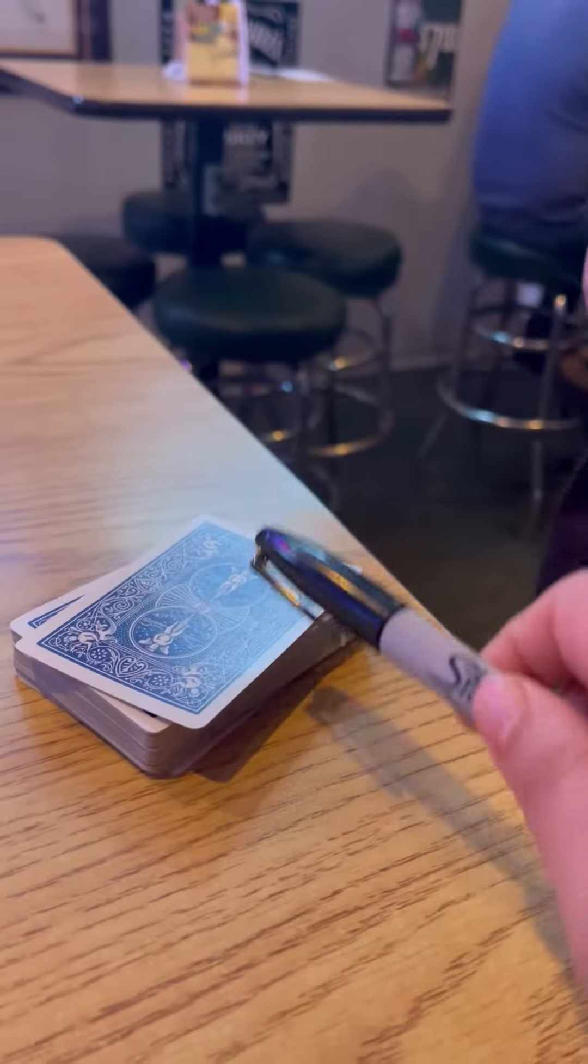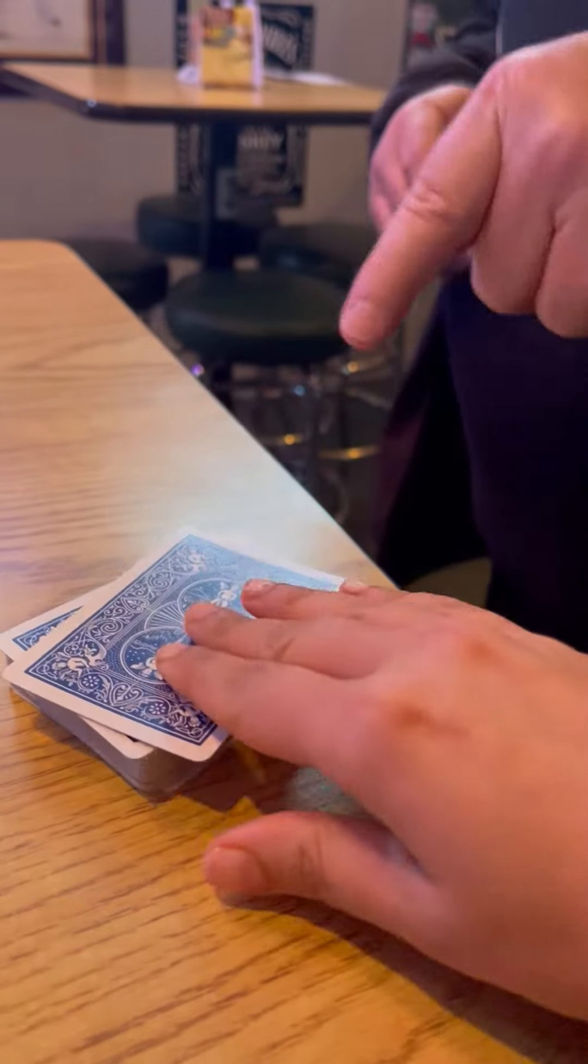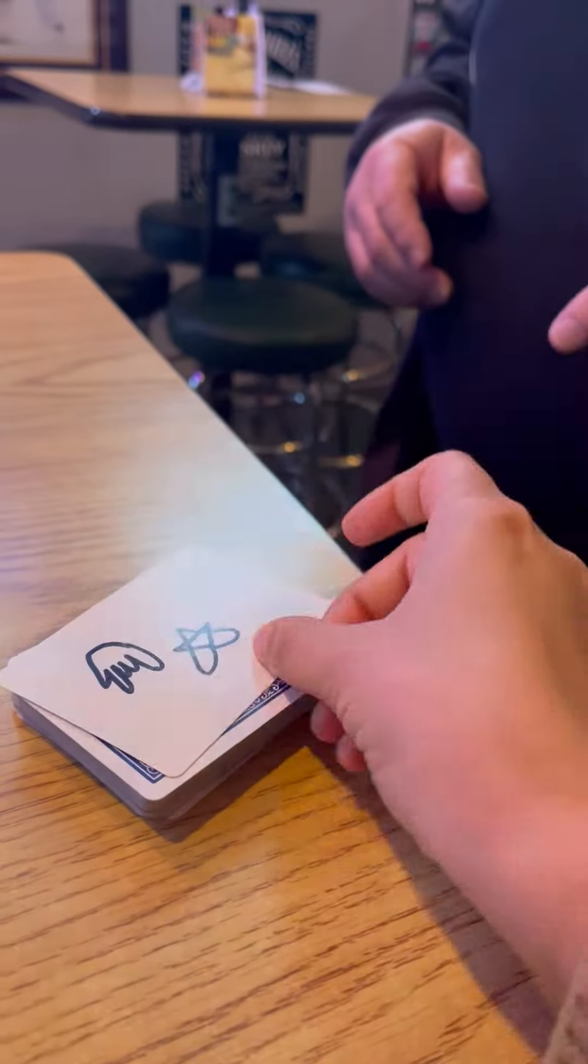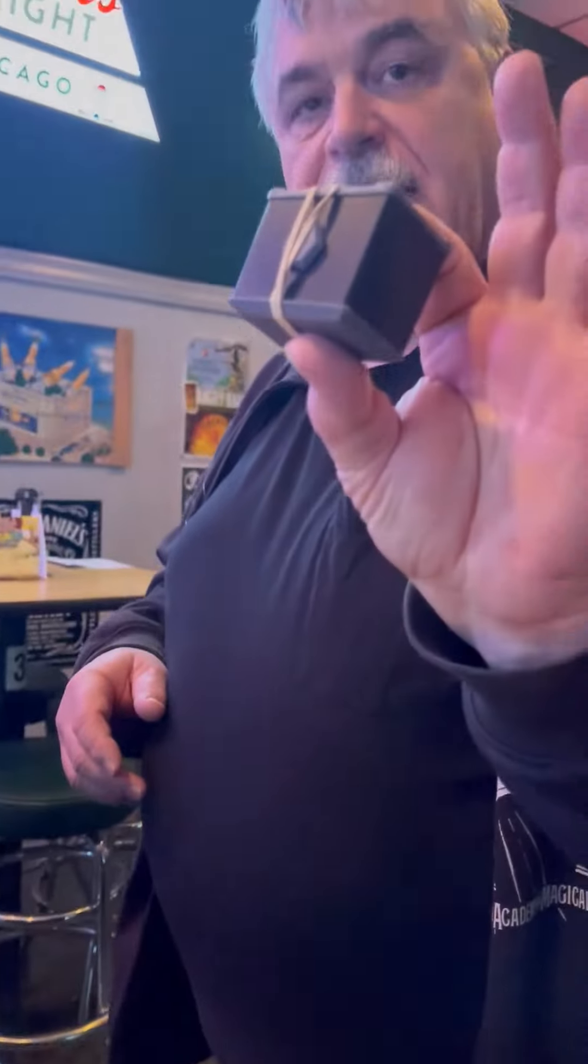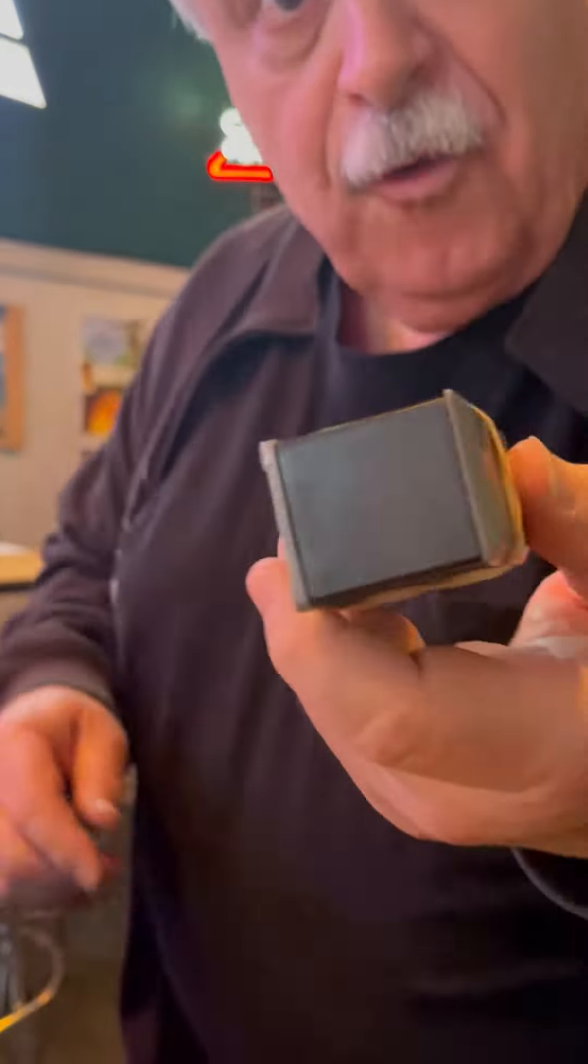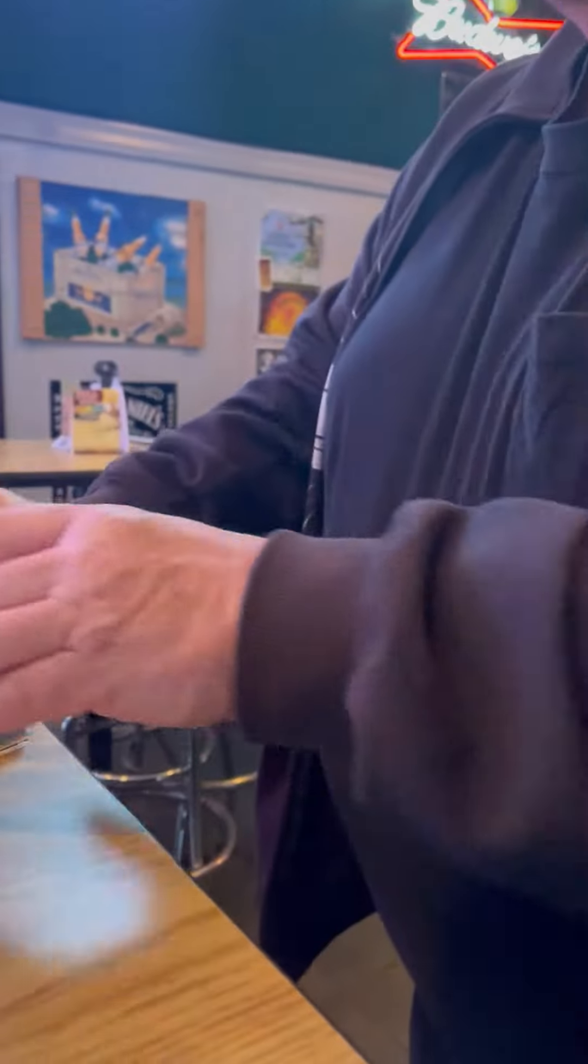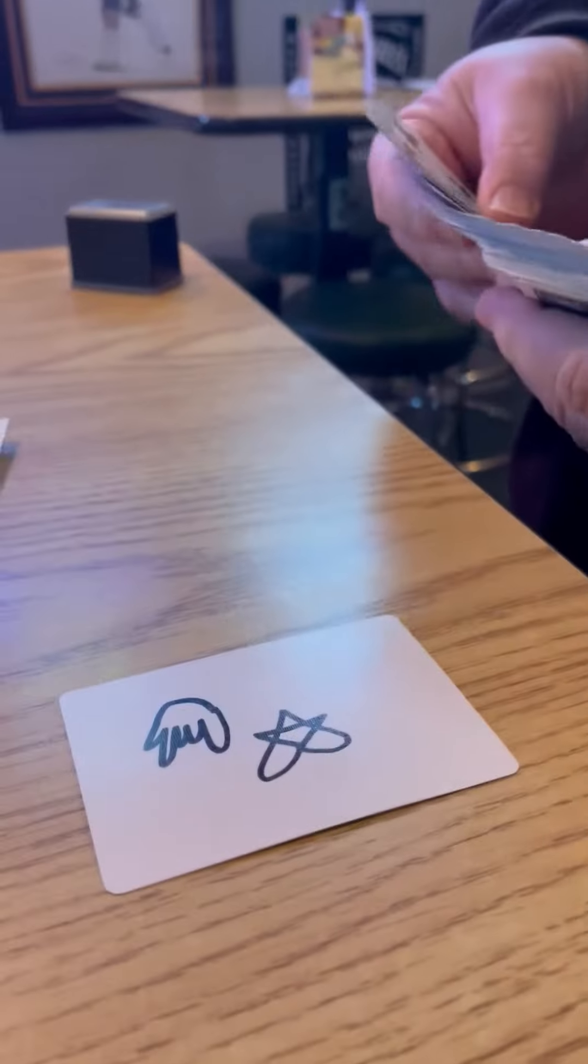We're gonna make this impossible. I brought the secret device. Have you seen one of these before? Really? It's a rubber band. You got to get out more. Yeah, we're gonna use your card, the rubber band, and the four queens.